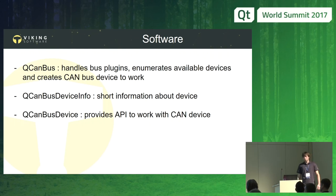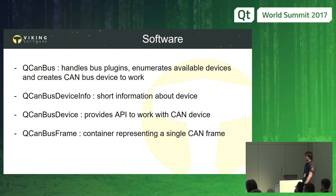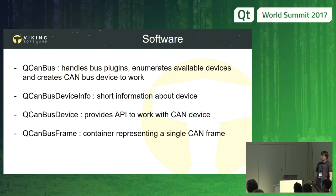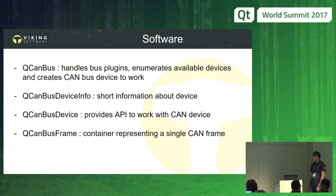QCanBusDevice provides the API to work with the CAN bus plugin and scan our device — it's the main class. It allows us to connect, disconnect, send, and receive data, and to receive signals, for example about incoming frames or errors. Next is QCanBusFrame — it's a container representing a single CAN frame. It has several fields, one of which is frame type. If we are only sending data, we can specify it as a data frame. If we want to get information back from a device, we can use a remote request frame. When the device receives such a frame, it understands that we want data back, and the payload size tells it how many bytes to send.